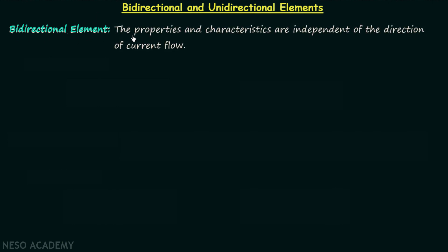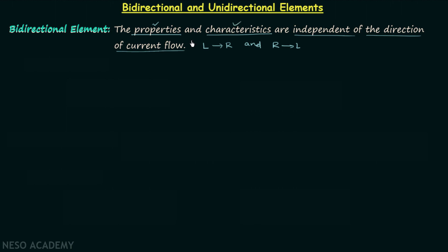A bidirectional element is an element in which the properties and characteristics are independent of the direction of current flow. When current flows from left to right, and when it flows from right to left, if in both cases the properties and characteristics remain the same, we call it a bidirectional element — because bidirectional means two directions. An example of a bidirectional element is a resistor.